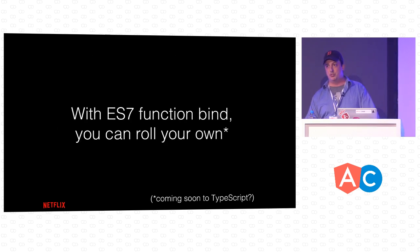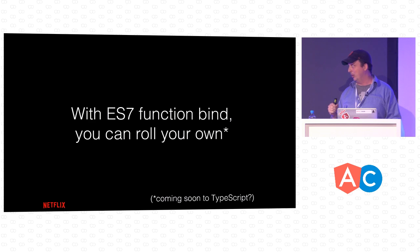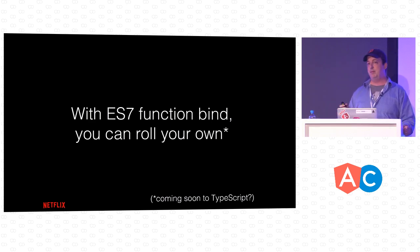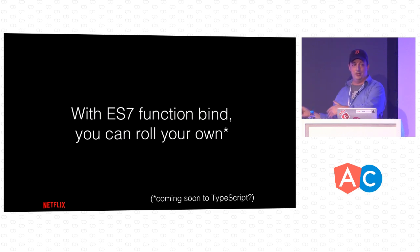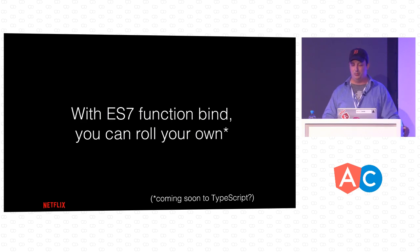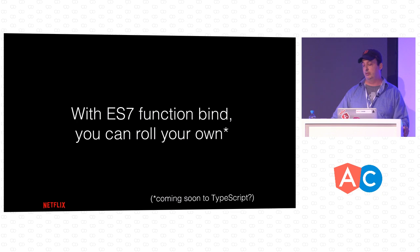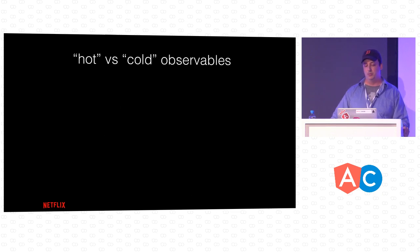With ES7 function bind, which I'm super excited about — there's a branch on TypeScript that has it implemented — you can roll your own operators. You create any function where this on the inside is your source observable, and then say myObservable::myOperator. You can already do this in Babel. I love this way of extending observable.